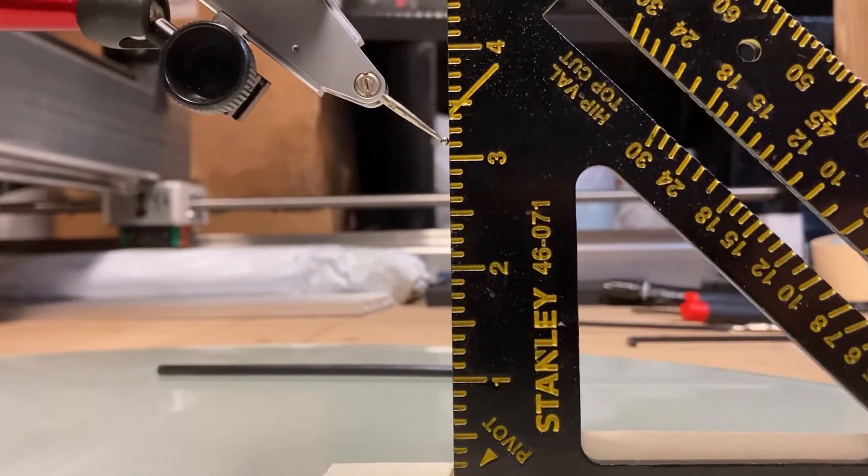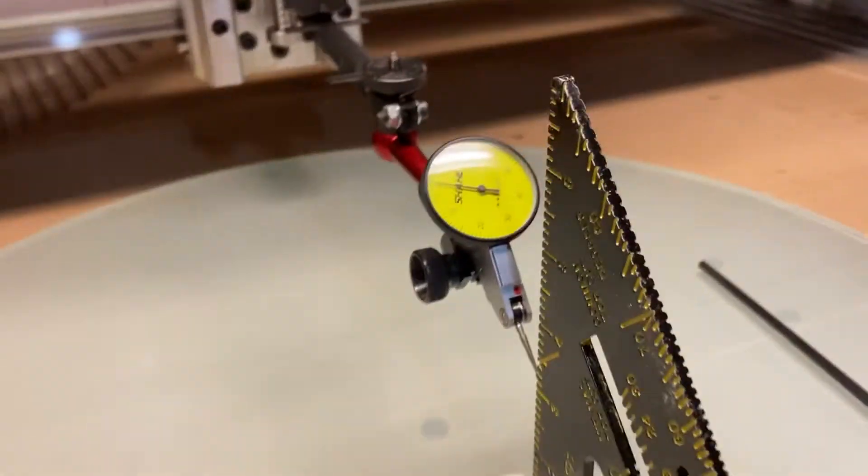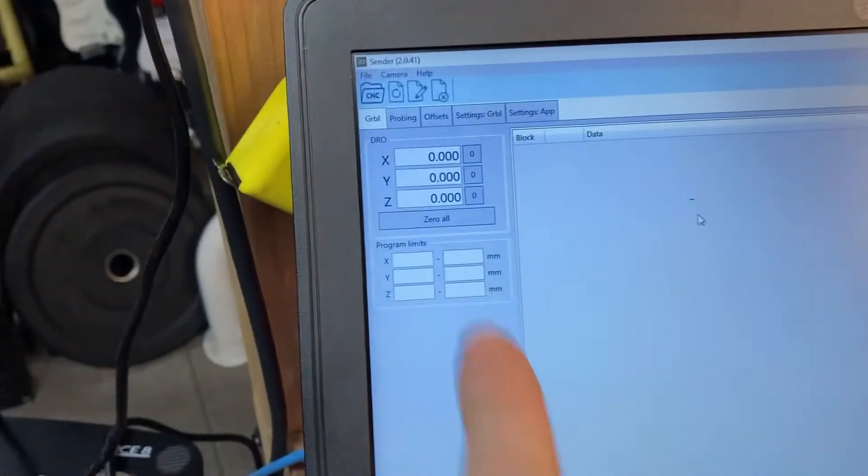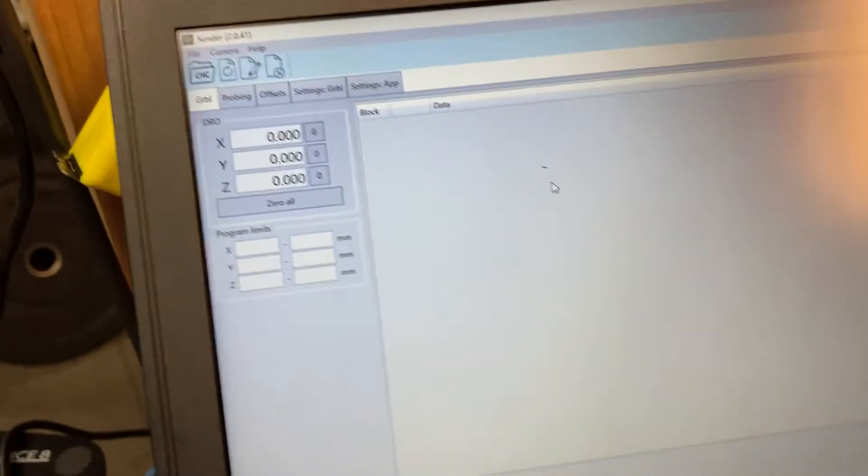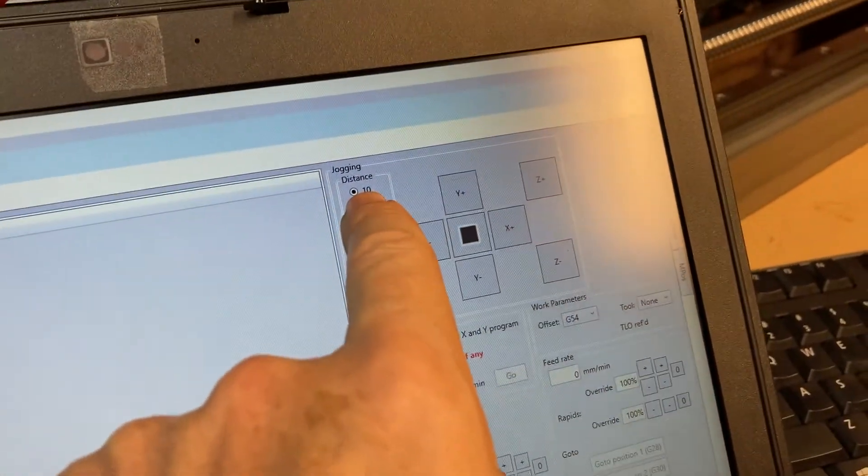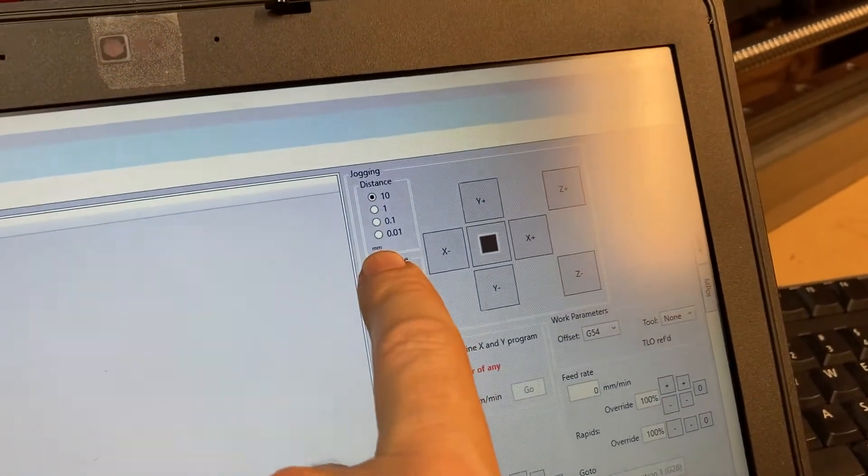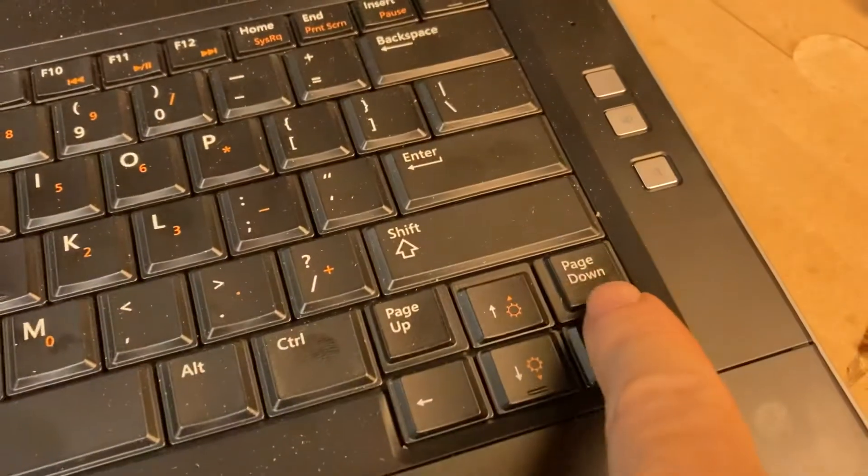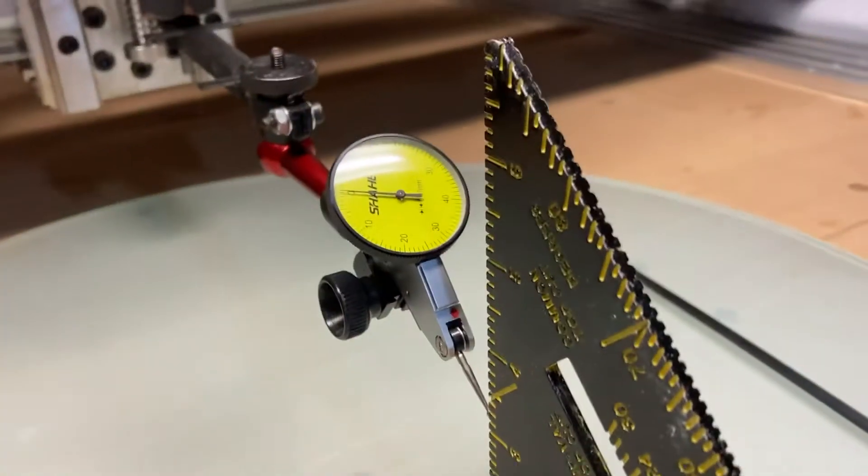Now what I'm going to do is go down on my Z. I've got my Z set to jog 10 millimeters every time I hit page down. So I'm going to hit page down,